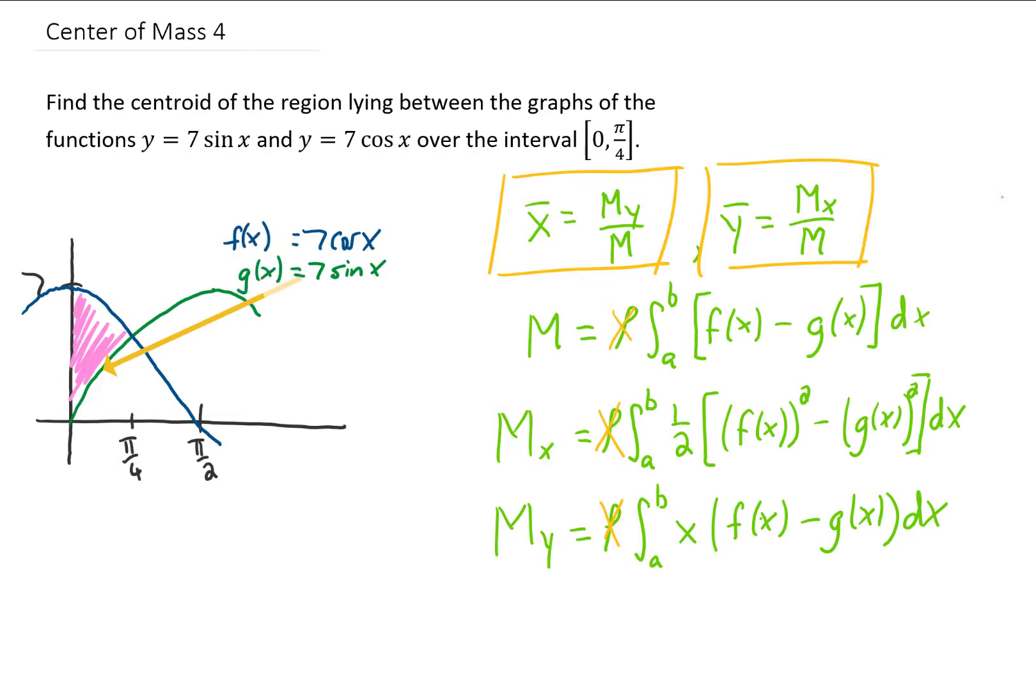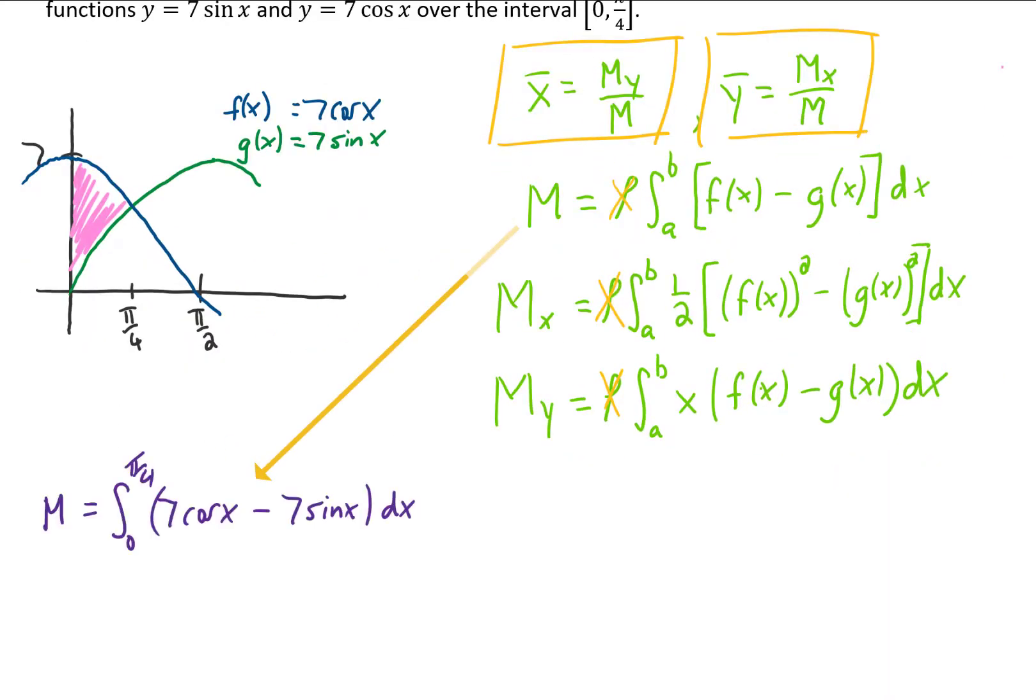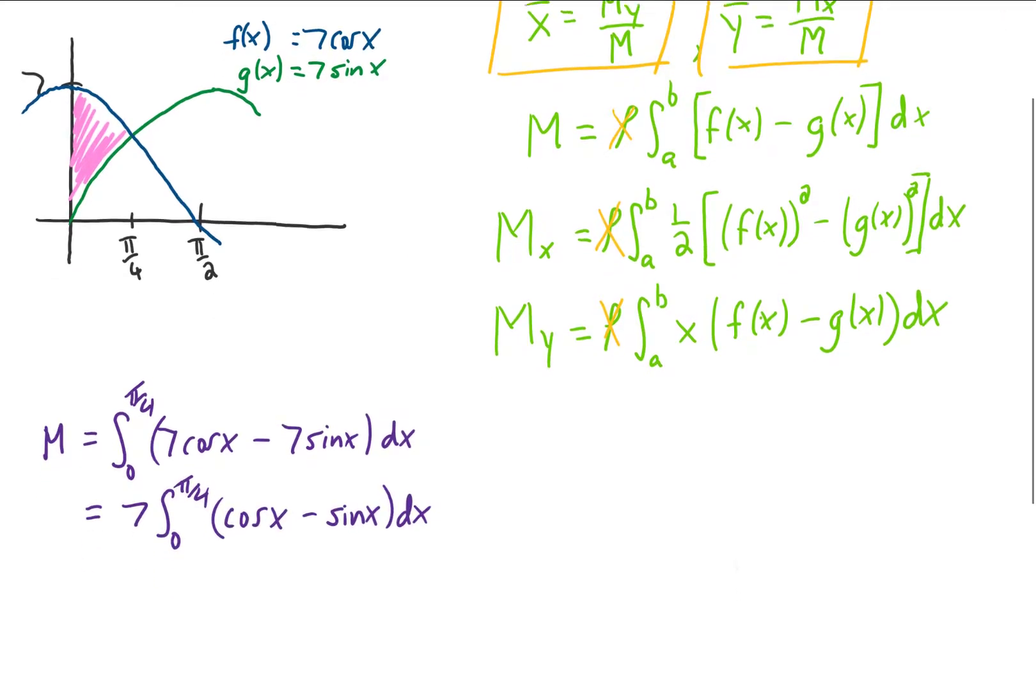All right, we may as well start with the mass integral. We're going to integrate 7 cosine of x minus 7 sine of x from 0 to pi over 4. It might help you to pull the 7 out of the integral. We can just factor it right out.